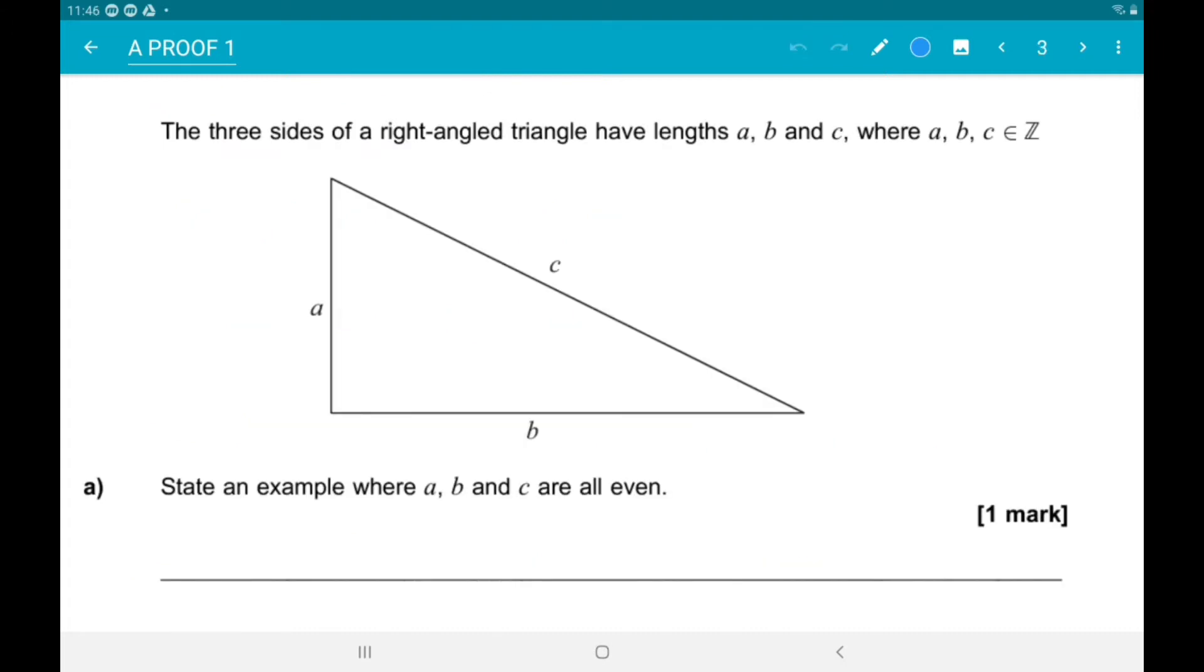Next up, the three sides of a right angled triangle are a, b, and c, where a, b and c are integers and are all even.